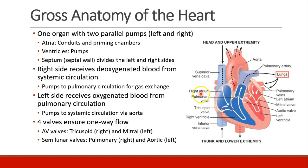The right side of the heart receives deoxygenated blood from the systemic circulation. The superior and inferior vena cava deliver deoxygenated blood, and then the right ventricle pumps blood out to the pulmonary circulation where gas exchange can occur. When blood returns from the lungs, it returns to the left side, where the oxygenated blood can be delivered to the left atrium, then to the left ventricle, and out through the aorta to the systemic circulation.